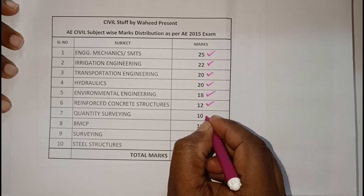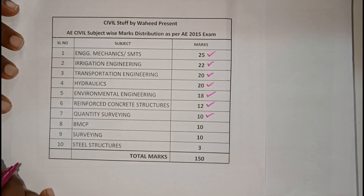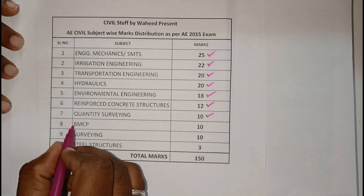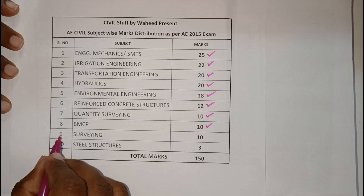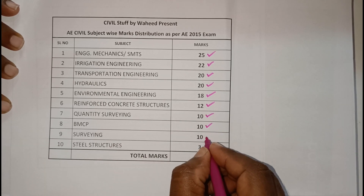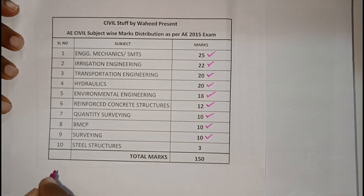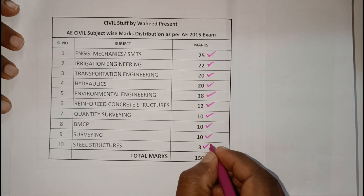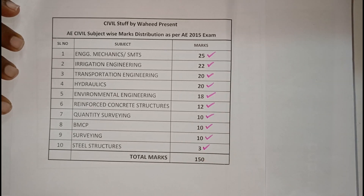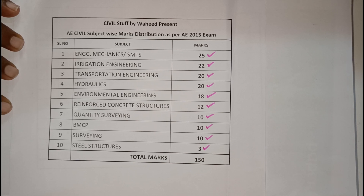Environmental engineering covers 18 marks, reinforced concrete structures 12 marks, quantity surveying 10 marks, building materials and construction practice 10 marks, and surveying 10 marks. Coming to steel structures, it is only 3 marks.